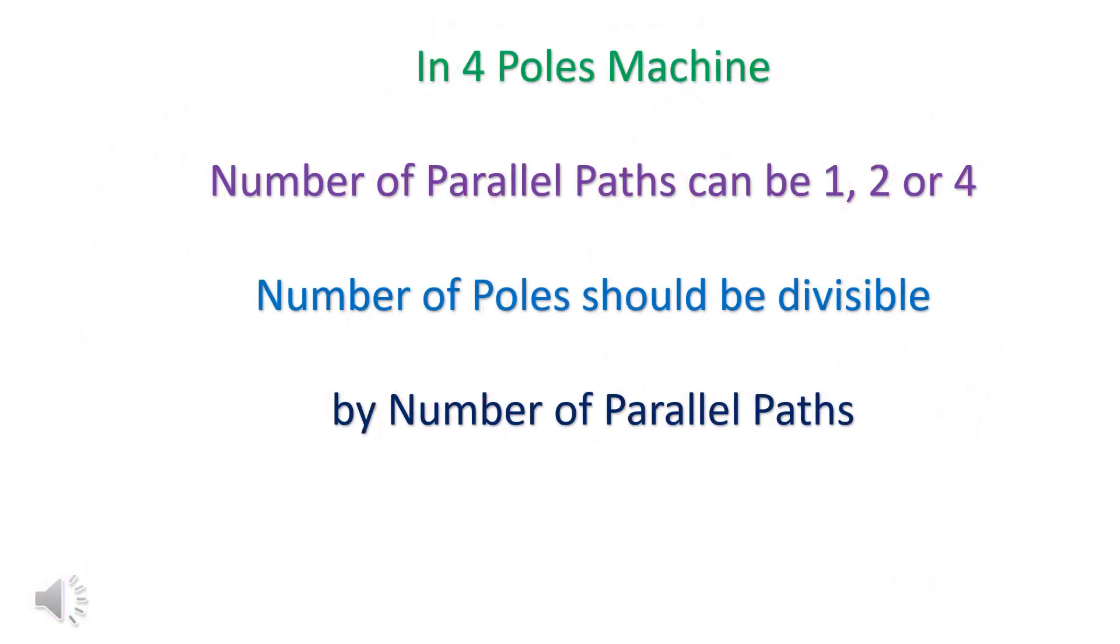In four pole machines, number of parallel paths can be 1, 2, or 4. Number of poles should be divisible by number of parallel paths.